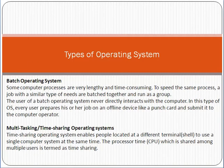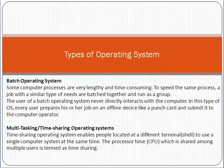The first type is the batch operating system. In a batch operating system, computer processes are very lengthy and time-consuming. To speed up the same process, jobs with a similar type of needs are batched together and run as a group. That is the concept of a batch operating system.